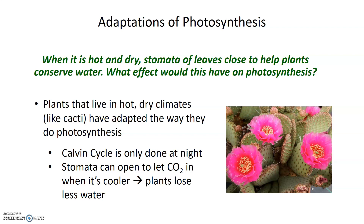The Calvin cycle or dark reactions are only done at night. The stomata can open to let CO2 in when it's cooler, and let oxygen out when it's cooler, so the plants lose less water. Those plants can easily do the light reactions during the day, generating a lot of energy and ATP needed to power the Calvin cycle. Then when it's cooler, those plants open their stomata at night, allow CO2 to come in, and convert it into glucose through the Calvin cycle.